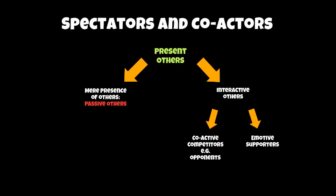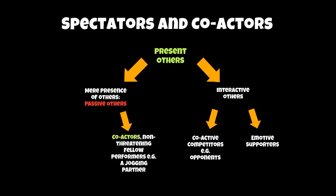Passive others fall into one of two categories. They are either co-actors — people who are non-threatening to your performance, for example if you were jogging up the street with a partner who isn't trying to influence you negatively — or in an 11-a-side football game, two defenders working together without negatively impacting each other. The other category is a passive audience, which can be silent but must be interested. An interested audience affects arousal levels, as does a non-threatening co-actor.